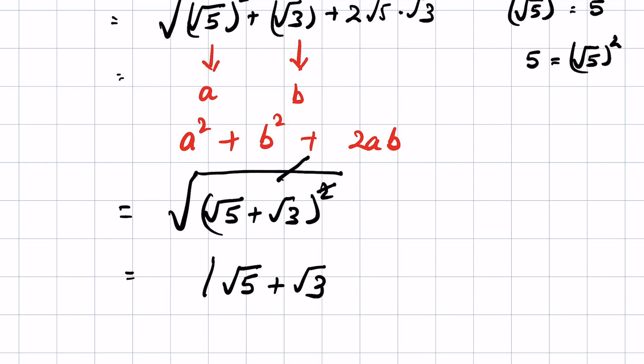You can substitute the values of square root of 5 and square root of 3 to get the exact decimal value, or you can leave the answer as square root of 5 plus square root of 3.